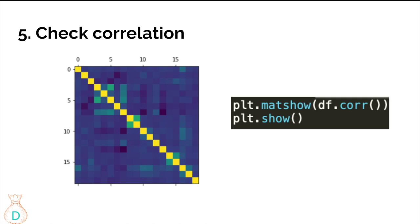I create a heat map by doing plt.matshow(df.corr()) and then plt.show() to display the plot. You can see the diagonal is all ones, and brighter colors indicate more highly correlated features. You use the heat map to visually identify which features are brighter, then go back to the correlation table to identify exactly which features those are.